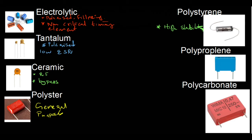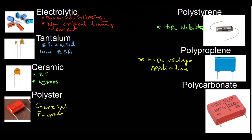Polypropylene capacitors are used for high-voltage applications such as power converters and SMPS. Polycarbonate capacitors are used wherever temperature stability is required — when temperature variation is a concern, polycarbonate is the choice.